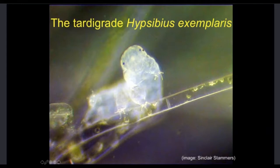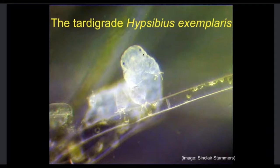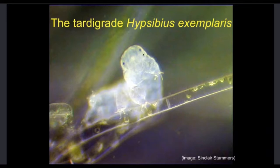They also have eye spots. We know that the eye spots are able to detect the difference between light and dark. We don't know if they can tell the difference between colors, and we know for sure that they cannot detect shape. They're very simple and microscopic — no more than maybe a millimeter in size. They live primarily in moist habitats, upon moss or lichen that's covered with a layer of water.